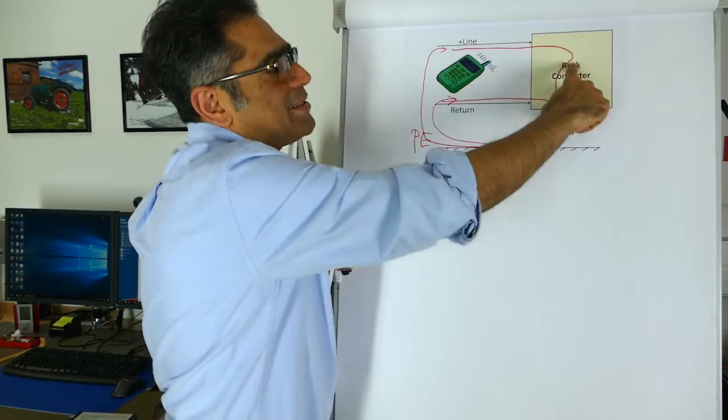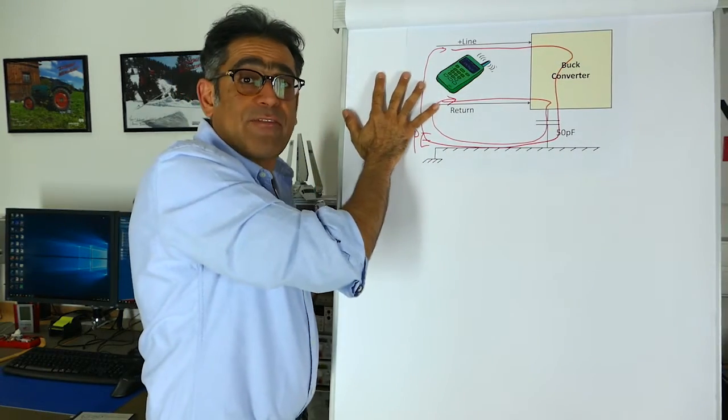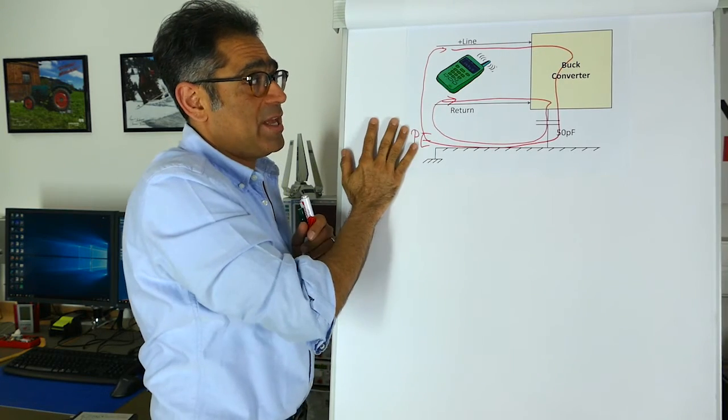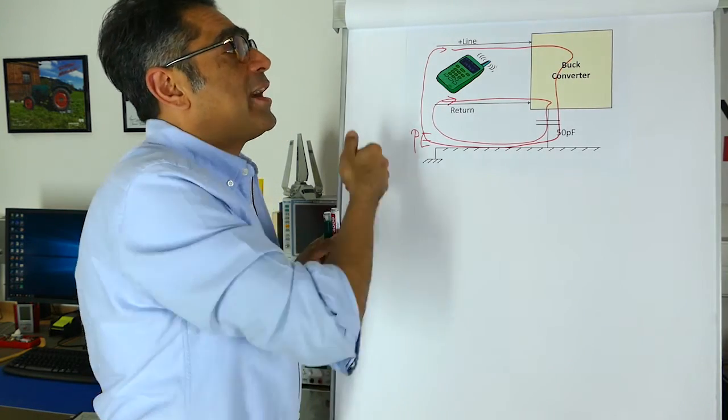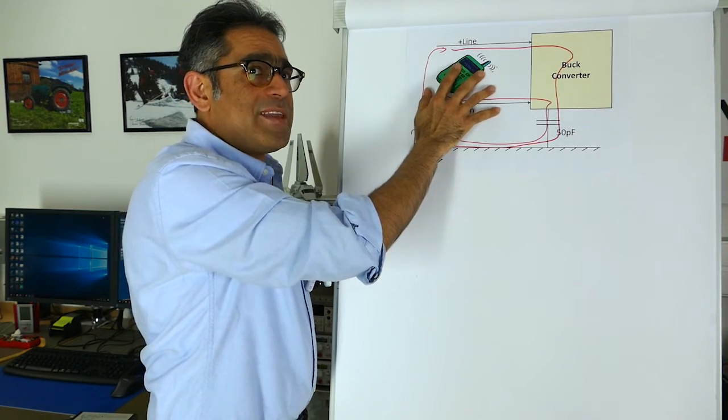The problem with these is that this loop is actually much larger, and therefore you may have conducted emissions test failures when you go to the EMC test chamber. Now I gave an example of a mobile phone coupling with the two lines. It doesn't necessarily have to be that.